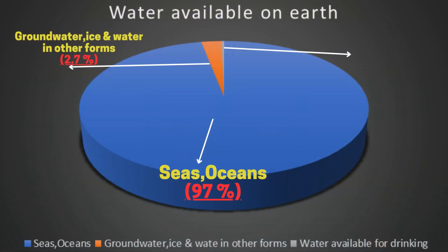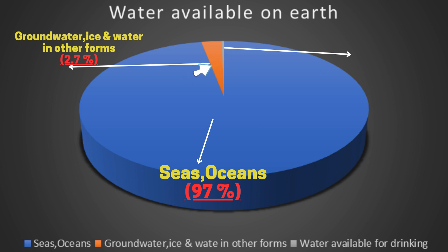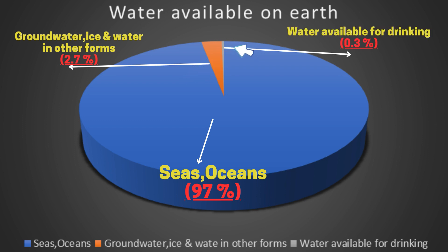Here we can see that there is 97% of water available on earth in the form of seas and oceans. And 2.7% of water is available underground, as ice and in other forms. And guess what? Only 0.3% of water is available for drinking.